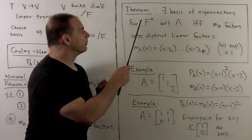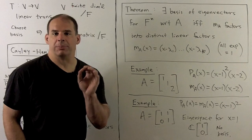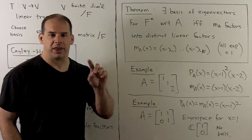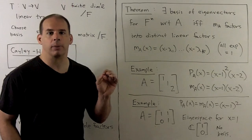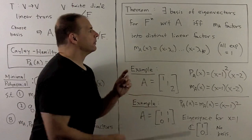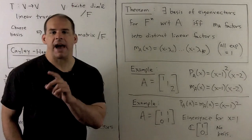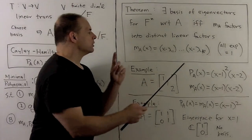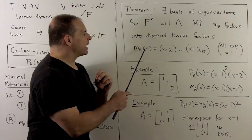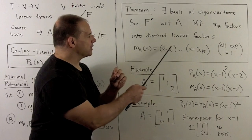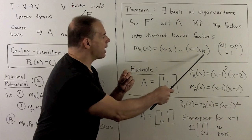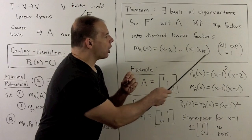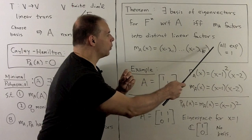Theorem: There exists a basis of eigenvectors for F^n with respect to A — meaning A can be put in diagonal form — if and only if M sub A factors into distinct linear factors. That means if we write M sub A of X as a product of terms X minus lambda sub i, the lambda sub i's are all distinct and all exponents are equal to one.